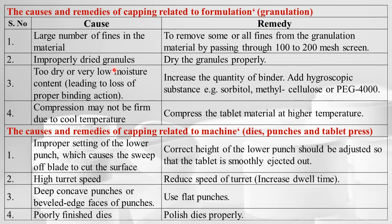Causes and remedies of capping related to formulation: If there are a large number of fines in the material, it may result in capping. We can remove some fines by passing the granulation material through a 100 to 200 mesh screen to lessen the chances of capping. Second, improperly dried granules — dry the granules properly.